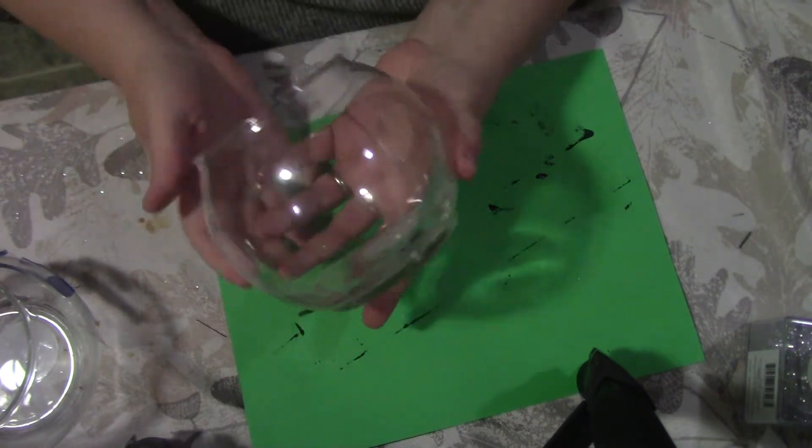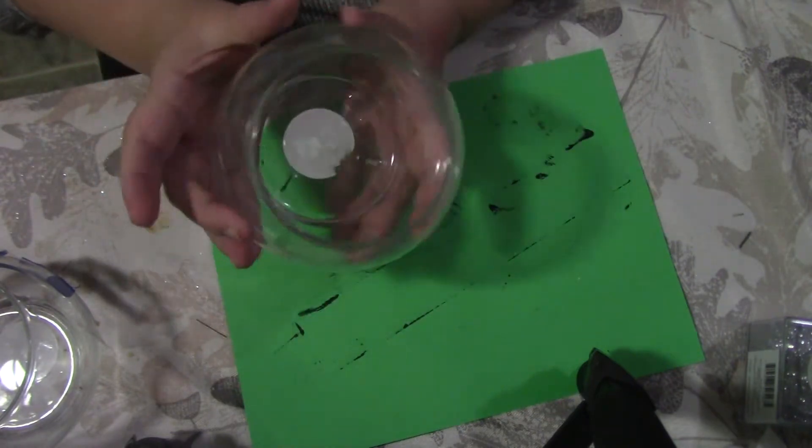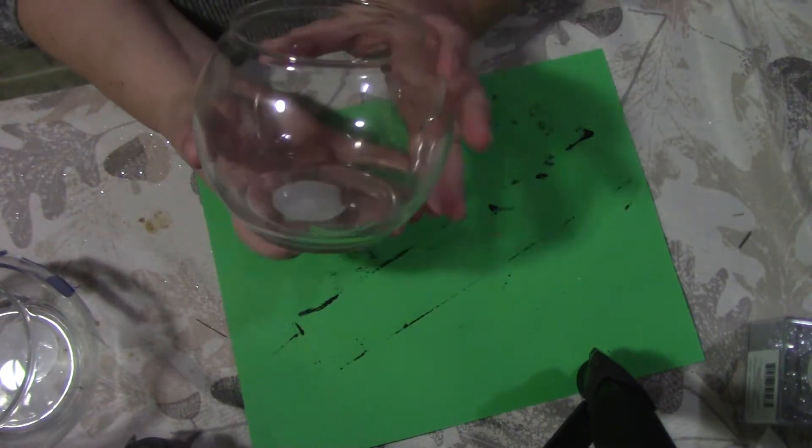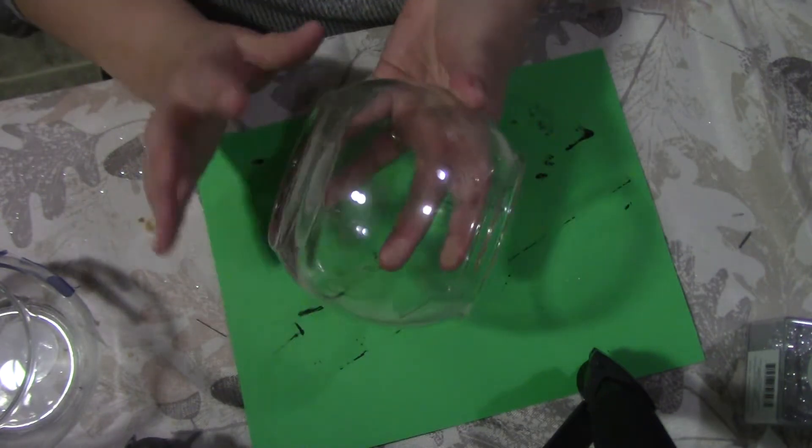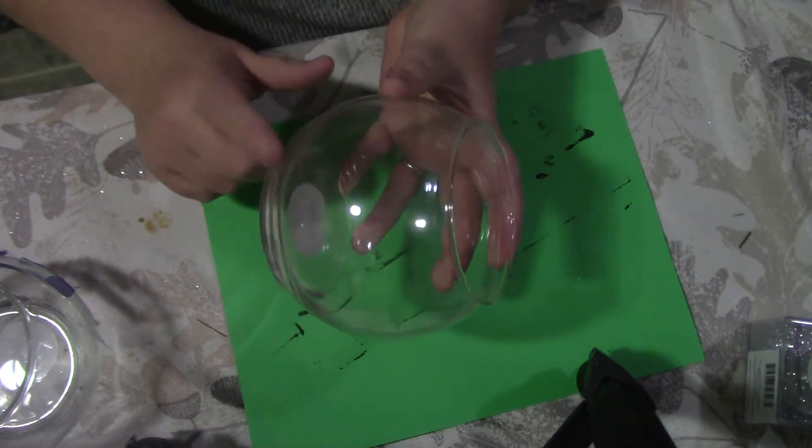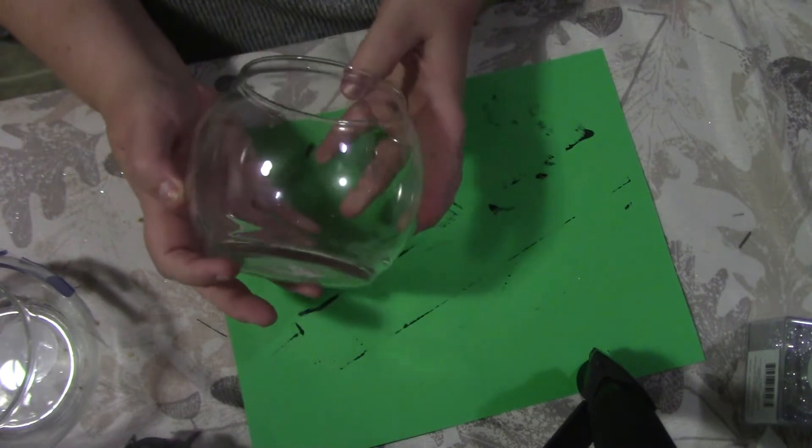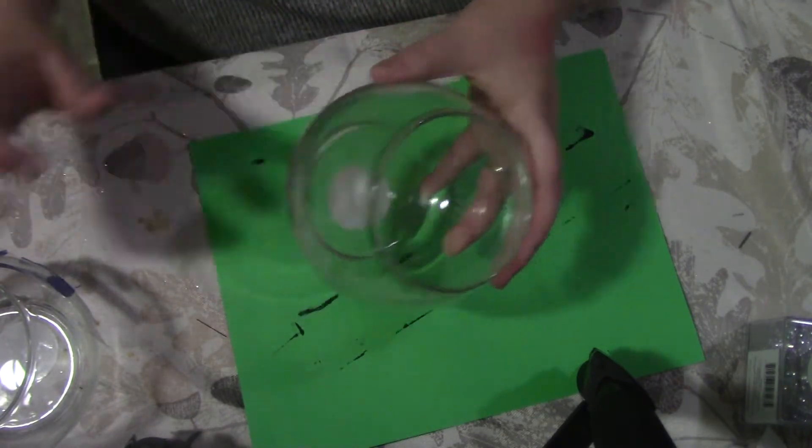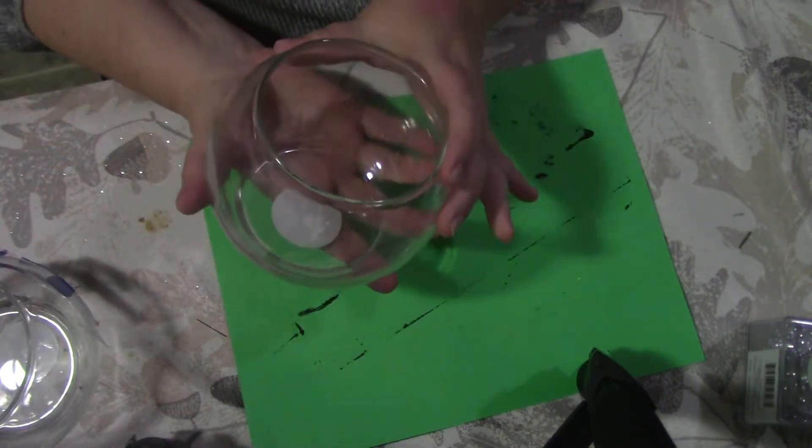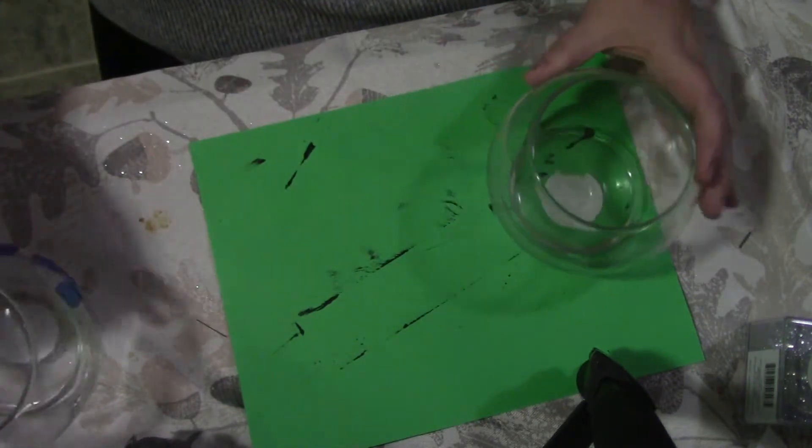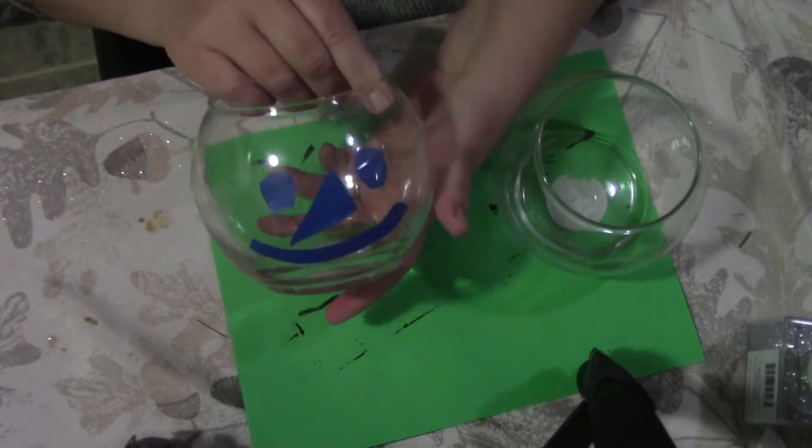We're using these little clear globes from the Dollar Tree. You can probably get them at Walmart or Dollar Store, but if you have a Dollar Tree, you can get them there for a dollar a piece. I'm going to use two. The first one is going to be the base, and then his head is going to be the next one.